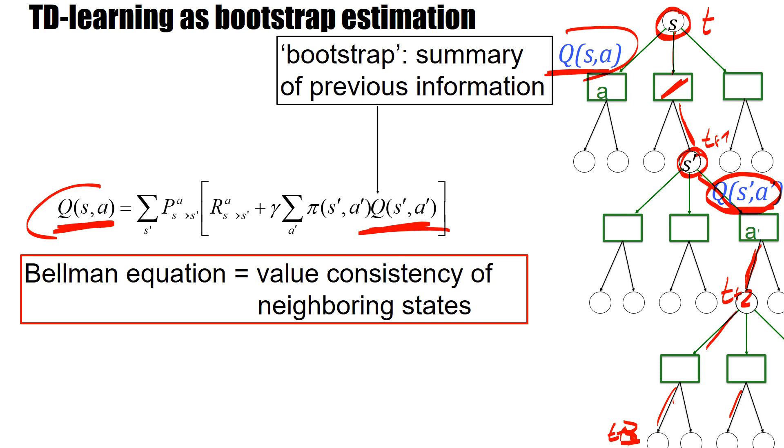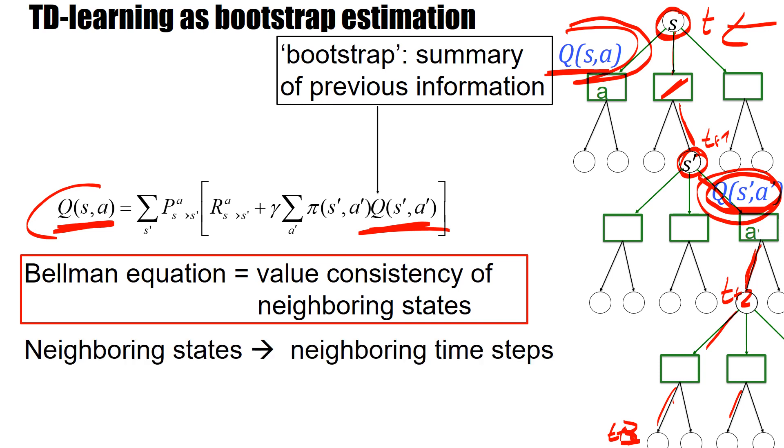And what we then really have is that if we compare Q values up here and Q values down there, then we compare Q values at time T with Q values at time T plus one. So neighboring states turn into neighboring time steps, and that's why it's called a temporal difference algorithm, a class of algorithms that exploits the Bellman equation that compares neighboring states.